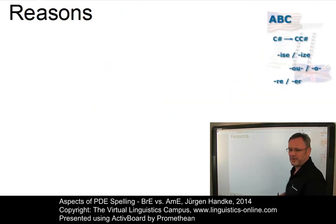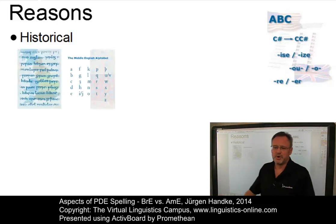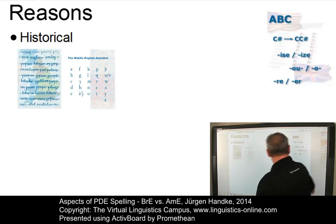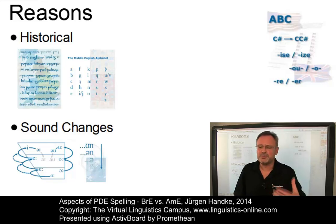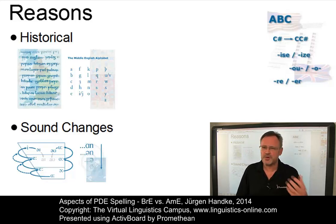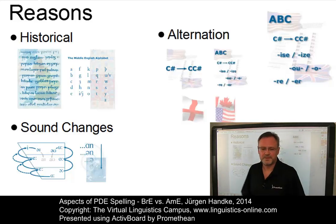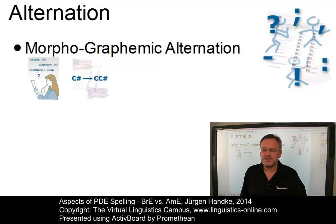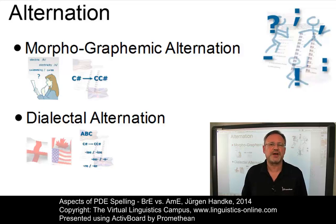The main reasons for the inconsistency in present-day English spelling are historical — for example, inconsistencies in spelling from the beginnings to the spread of English around the world. Then there are sound changes, such as the Great Vowel Shift, where numerous sound changes that occurred during the development of English were not mapped onto the spelling of words. And then there are cases of alternation, which we can subdivide into morphographemic alternation — the change of orthographical structure under the influence of affixation — and dialectal alternation, the variation of spelling across the central varieties of English.